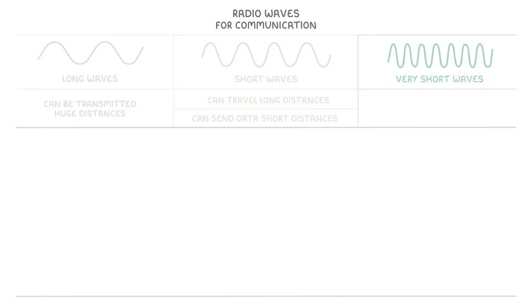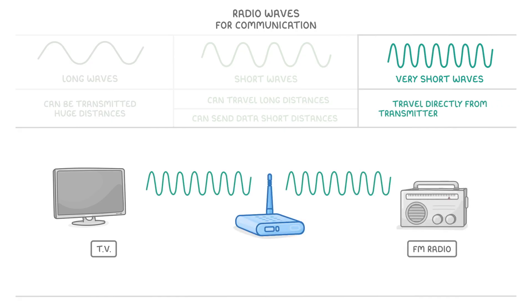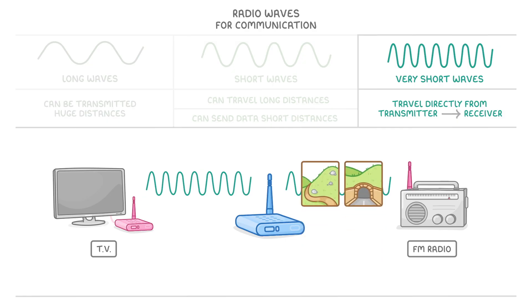The last type are very short radio waves, which are used for TV and FM radio. These ones have to travel directly from the transmitter to your receiver, which is why you don't always get a great radio signal when you're in the car, because surrounding structures like hills and tunnels can get in the way of that direct transmission.